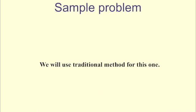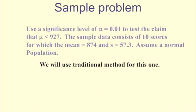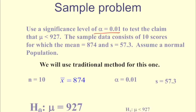So let's use the traditional method, which uses critical values for this example. Let's use a significance level of alpha equals 0.01 to test the claim that our mean is less than 927. So our sample data consists of 10 scores. The 10 scores have a sample mean of 874 and a sample standard deviation of 57.3.